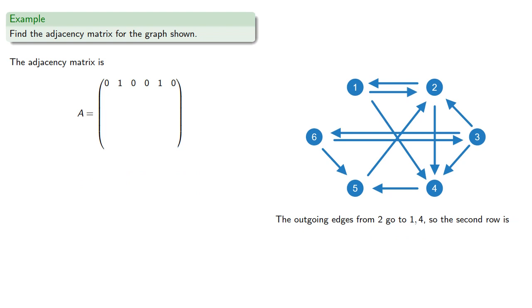The outgoing edges from 2 go to vertices 1 and 4, so the 2nd row again will be all 0s except the 1st and 4th entries.